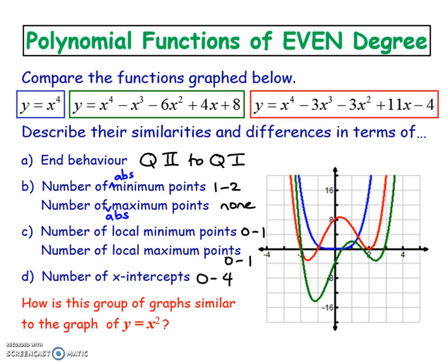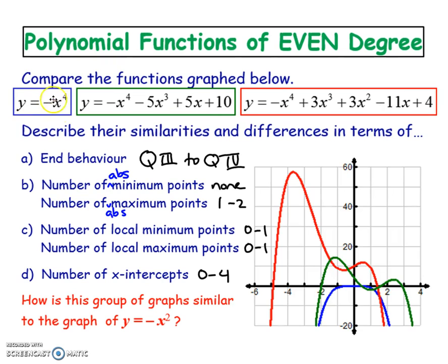I'm going to flip it upside down with a negative leading coefficient. As expected, you should see that the end behavior goes from three to quadrant four, and none of this stuff should change from the previous slide.